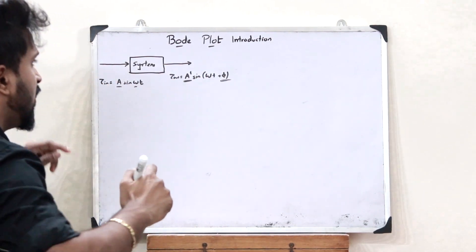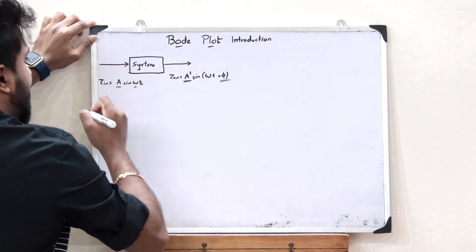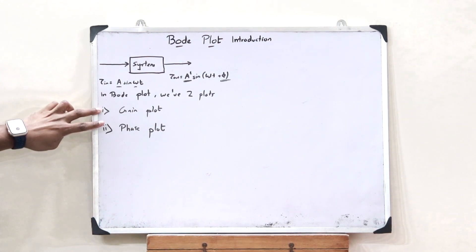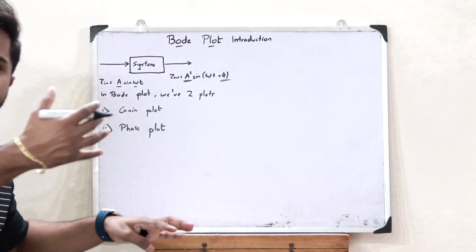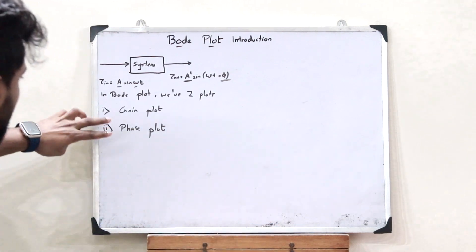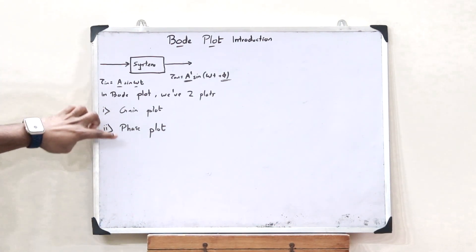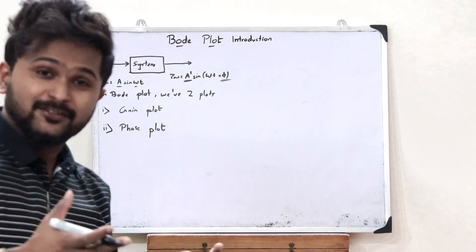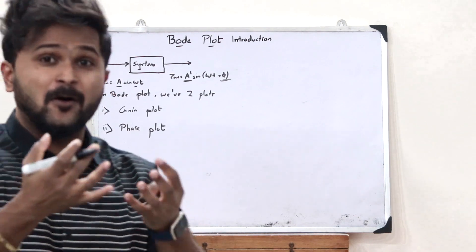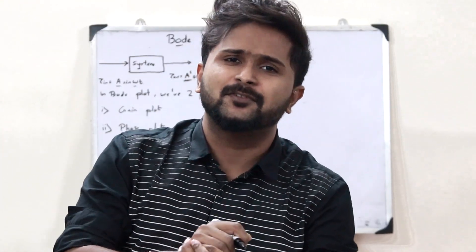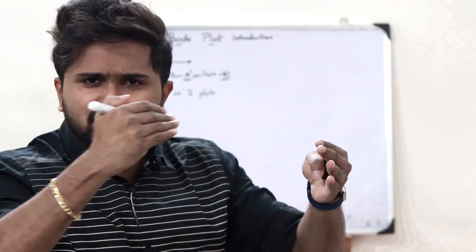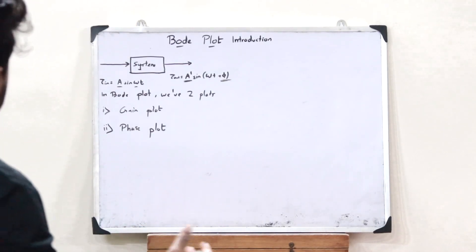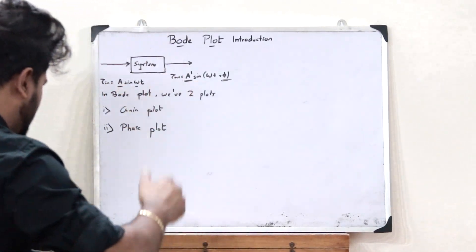There are two plots that we plot — one plot is for the gain and the other plot is for the phase. In order to obtain this gain plot and this phase plot, there are a set of steps that we need to follow. Once we obtain these two plots, we can find if this particular control system is stable or unstable.